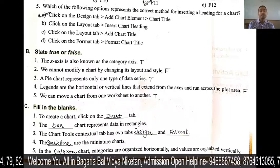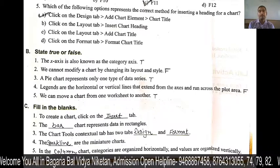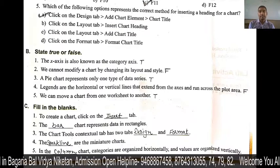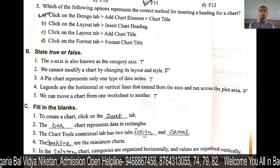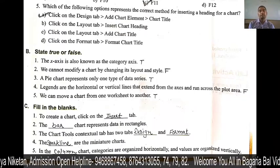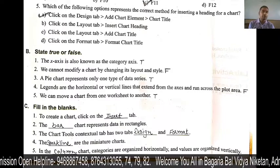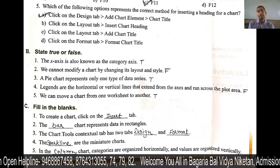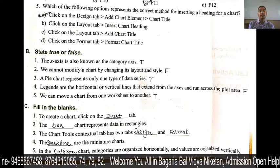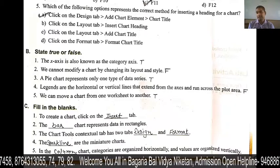Next is: legends are the horizontal or vertical lines that extend from the axis and run across the plot area. This is false — those horizontal or vertical lines running across the plot area are called grid lines, not data legend. Next is: we can move a chart from one sheet to another. This is true.